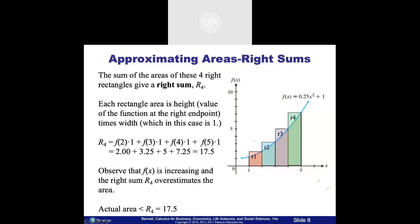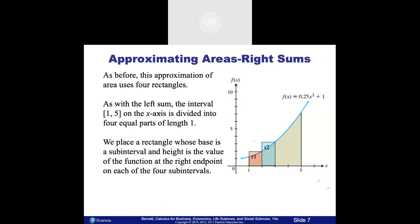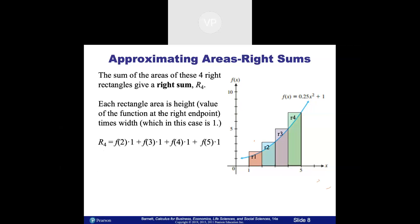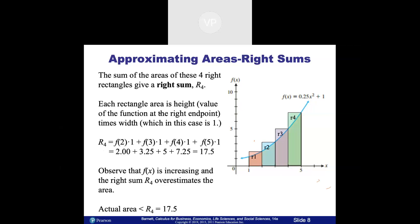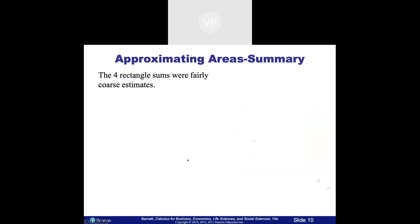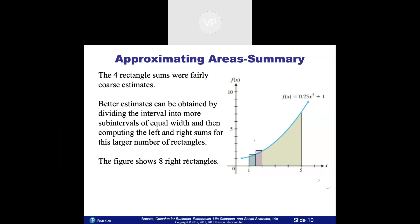So the underestimate was 11.5 and the overestimate is 17.5. We still don't have the exact area yet, but at least we know it's somewhere between 11.5 and 17.5. It's not exactly in the middle because it's not a straight line, but it's going to be somewhere around 14.5. So R is an overestimate, L is an underestimate, and the actual area is somewhere in between.